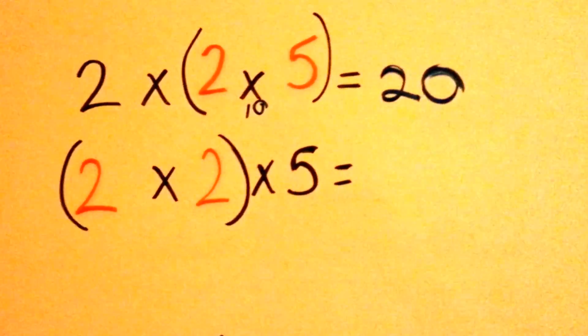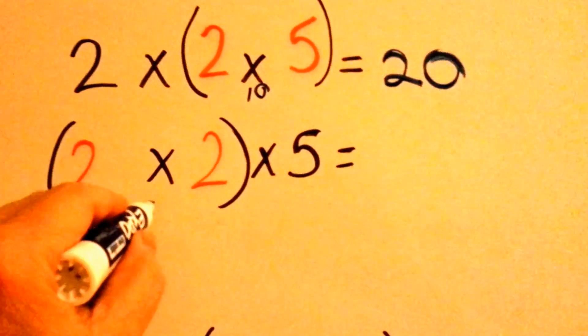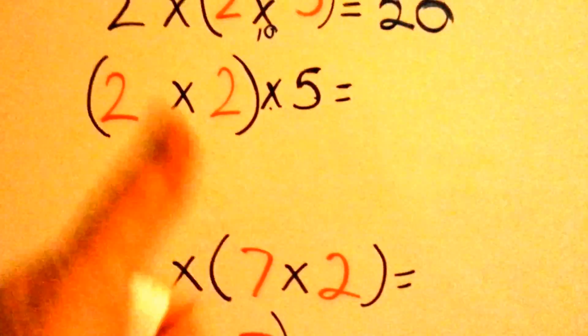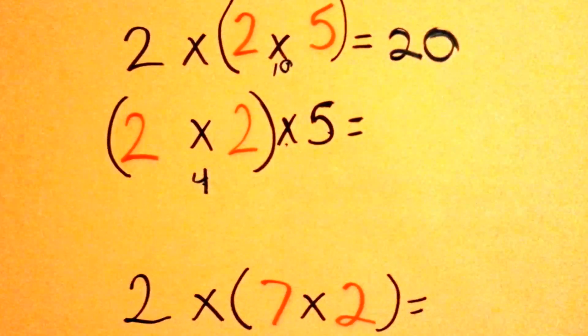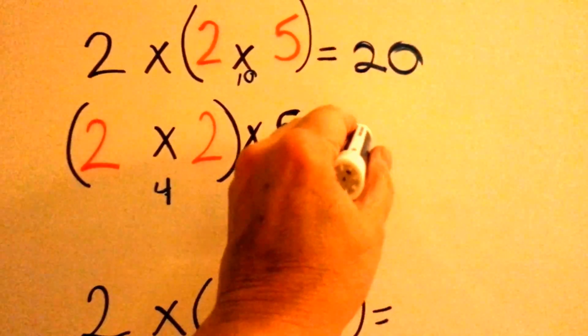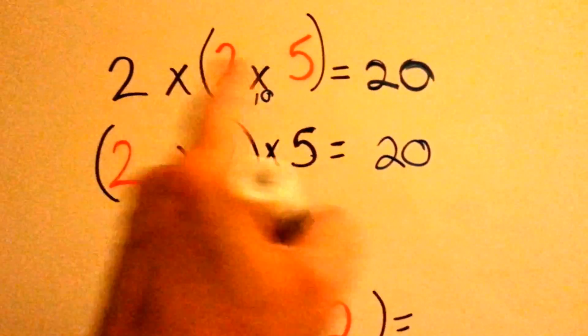What's two times two? Two times two is four. What's four times five? Five, ten, fifteen, twenty. Counting by fives, four times, and it's twenty, just like this one.